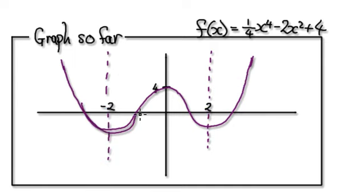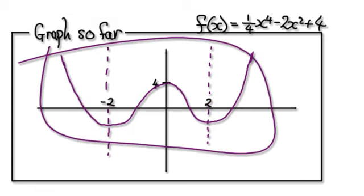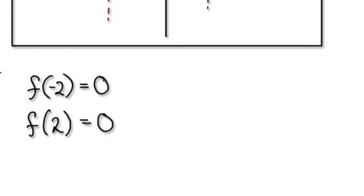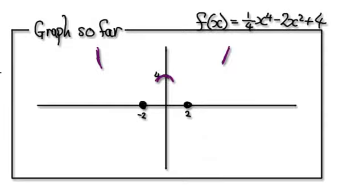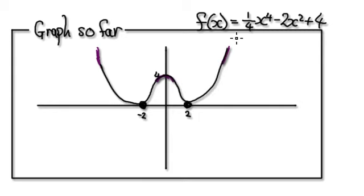This is what we thought earlier — we guessed it to be something like this. But in fact it's actually here. The turning point should be here and it should be here. And by the way, the other turning point is when x equals 0, which is the intercept here. So our graph should look something like this.